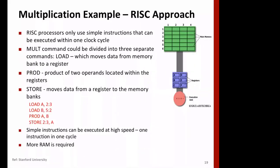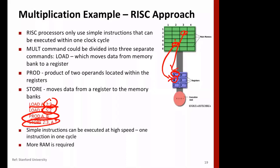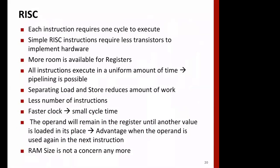In the RISC approach, we have to do separate load and store operations. First, load register A with the value at location (2,3), load register B with the value at (5,2), then execute multiply, and then store the result from the register back to location (2,3). There are a number of instructions executing separately, while in CISC many of these steps are built into one instruction. The claim is that simple instructions can be executed at high speed one at a time, however, more memory is required to store the RISC instructions.